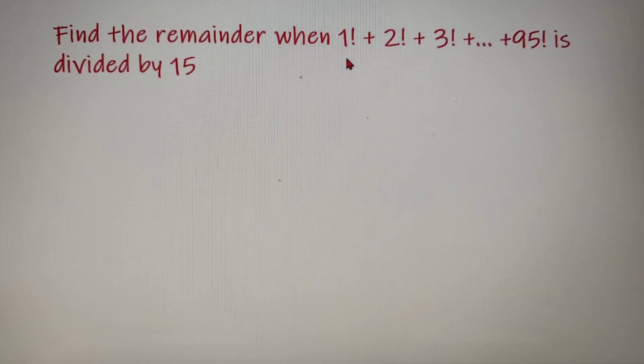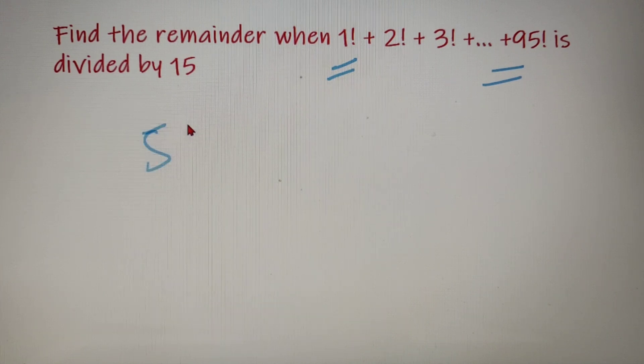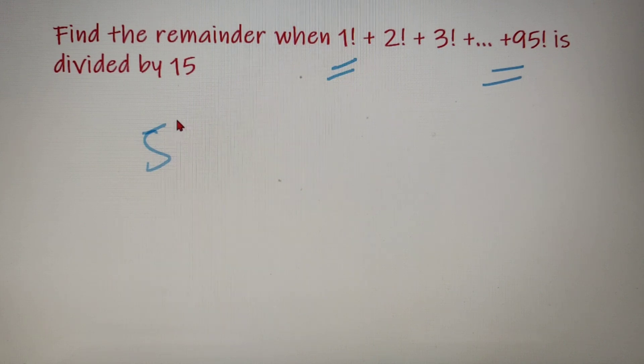Now you may be thinking that we have to calculate the factorials of all the numbers from 1 to 95, but this is not the case. All the numbers from 5, that is 5 factorial, are divisible by 15.